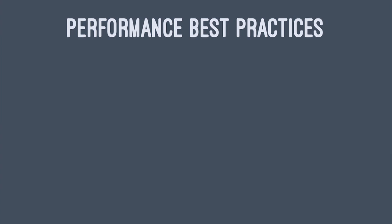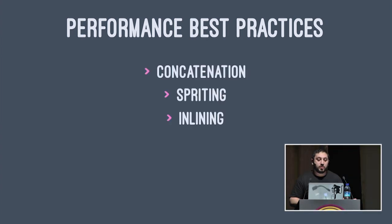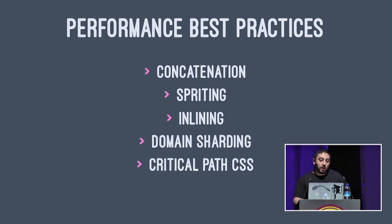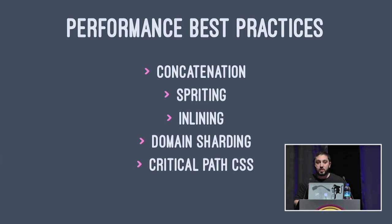Keeping these things in mind, you can see where our common best performance practices come from. Things like concatenation, spriting, inlining, and domain sharding are all ways to work around opening more connections, doing more handshakes, and avoiding latency. And CSS's critical path is a way of working around congestion control — the idea being you inline enough CSS to fit within that first TCP window while the connection is still being tested.